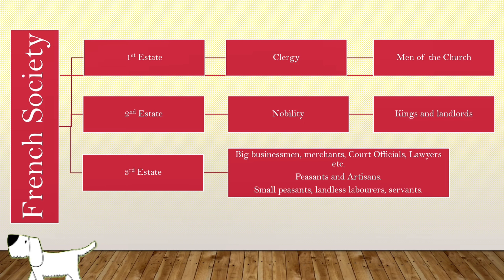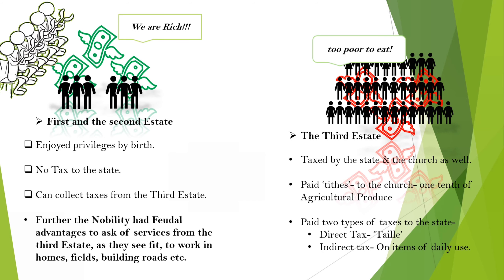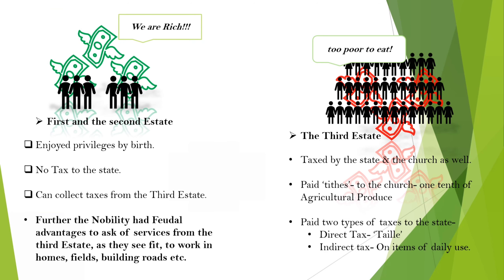The society was structured in a way that made the rich richer and the poor poorer. A very small number of farmers owned the land they cultivated — almost 60% of it was owned by the nobles, the church, and the richer members of the third estate. Members of the first two estates also enjoyed certain privileges by birth, like exemption from paying tax to the state.